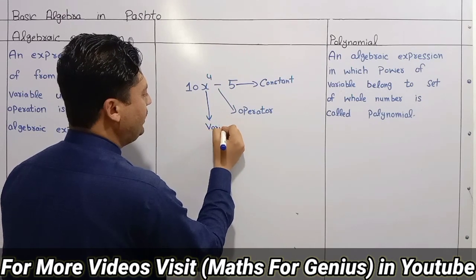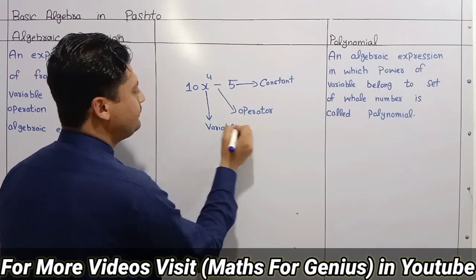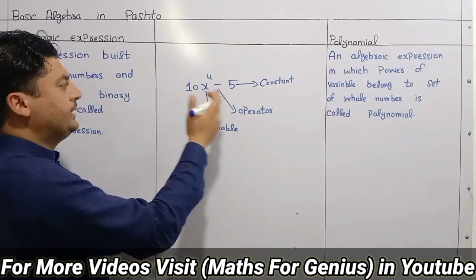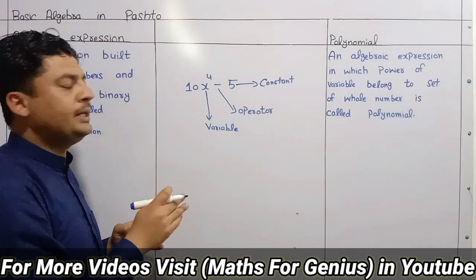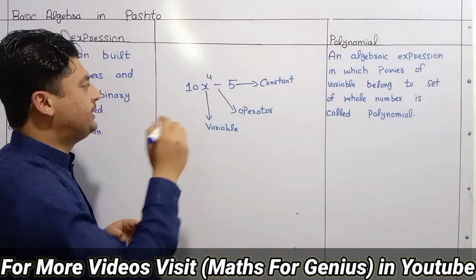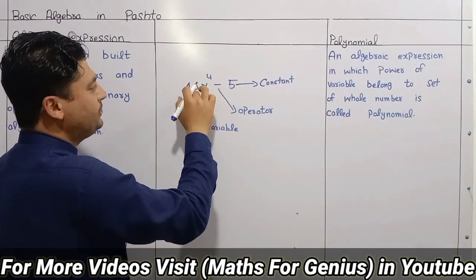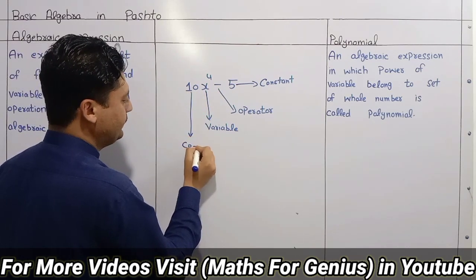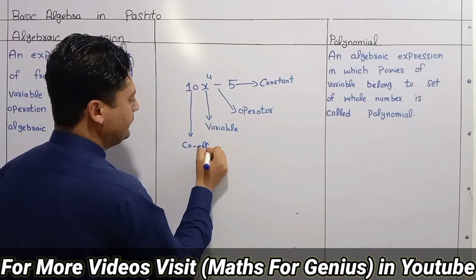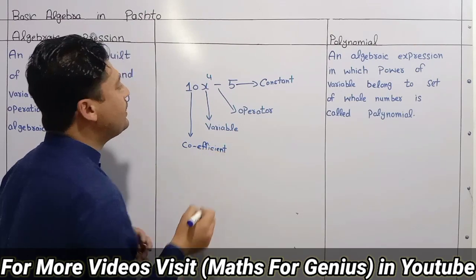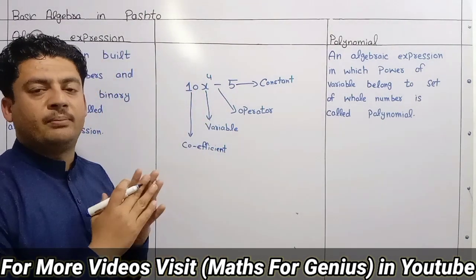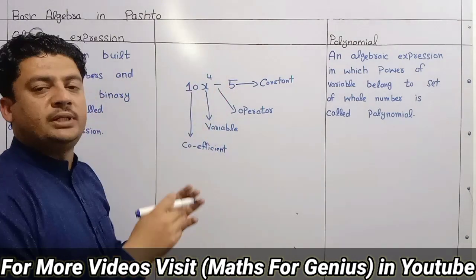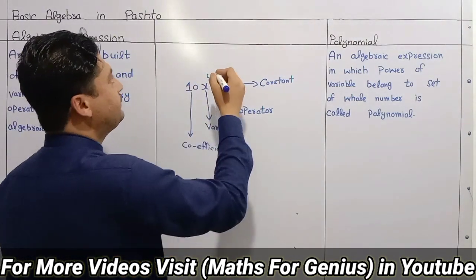The variable is on the left side. The number is the coefficient — for example, the X coefficient. The variable is the coefficient. The number is the number. Now the variable's power, or exponent, is Y.